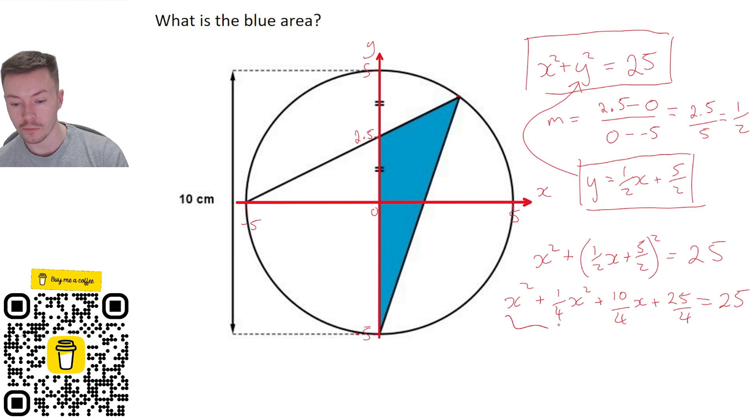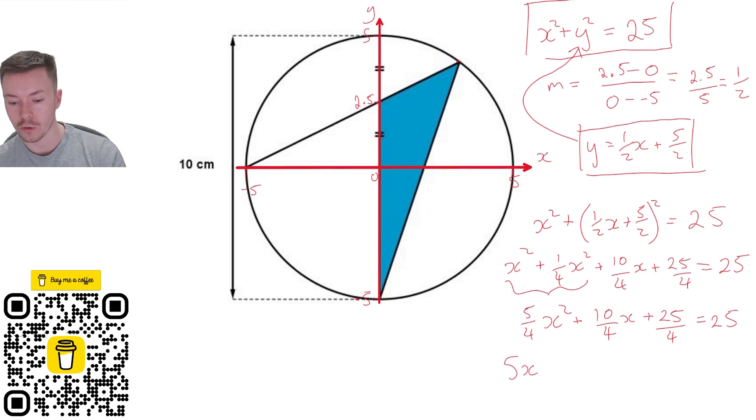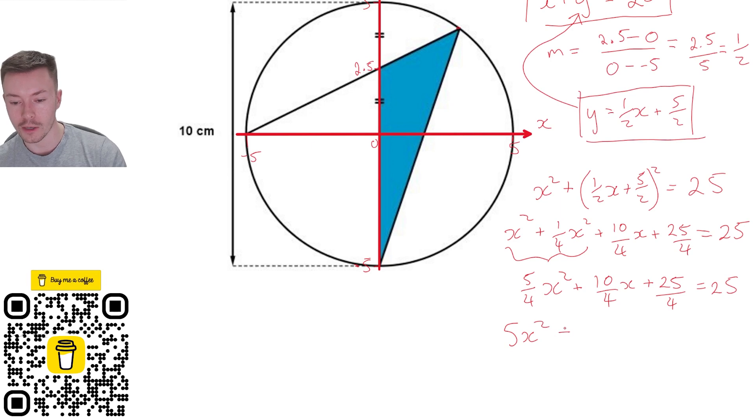I'm going to collect my like terms now. It's only these first two that I need to collect, so that's going to be 5 over 4 x squared plus 10 over 4 x plus 25 over 4. Now I could take away my 25 here, but actually what's going to be easier is multiplying everything by 4 and then dividing by 5. So I times everything by 4, I get 5x squared plus 10x plus 25 equals 100.